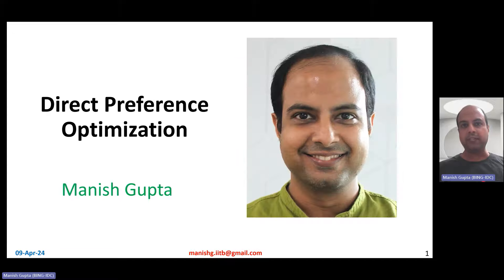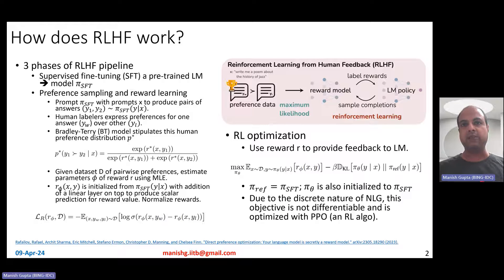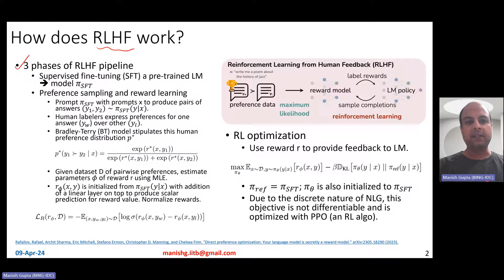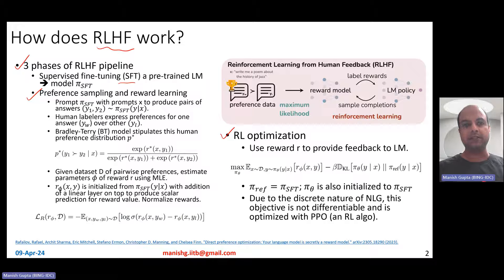Before we understand how DPO or direct preference optimization works, it's a good idea to recap how reinforcement learning using human feedback (RLHF) is done with large language models these days. The RLHF pipeline actually involves three different phases: the first phase is supervised fine-tuning, the second is learning the reward model, and the third phase is using reinforcement learning-based optimization to update the model parameters.